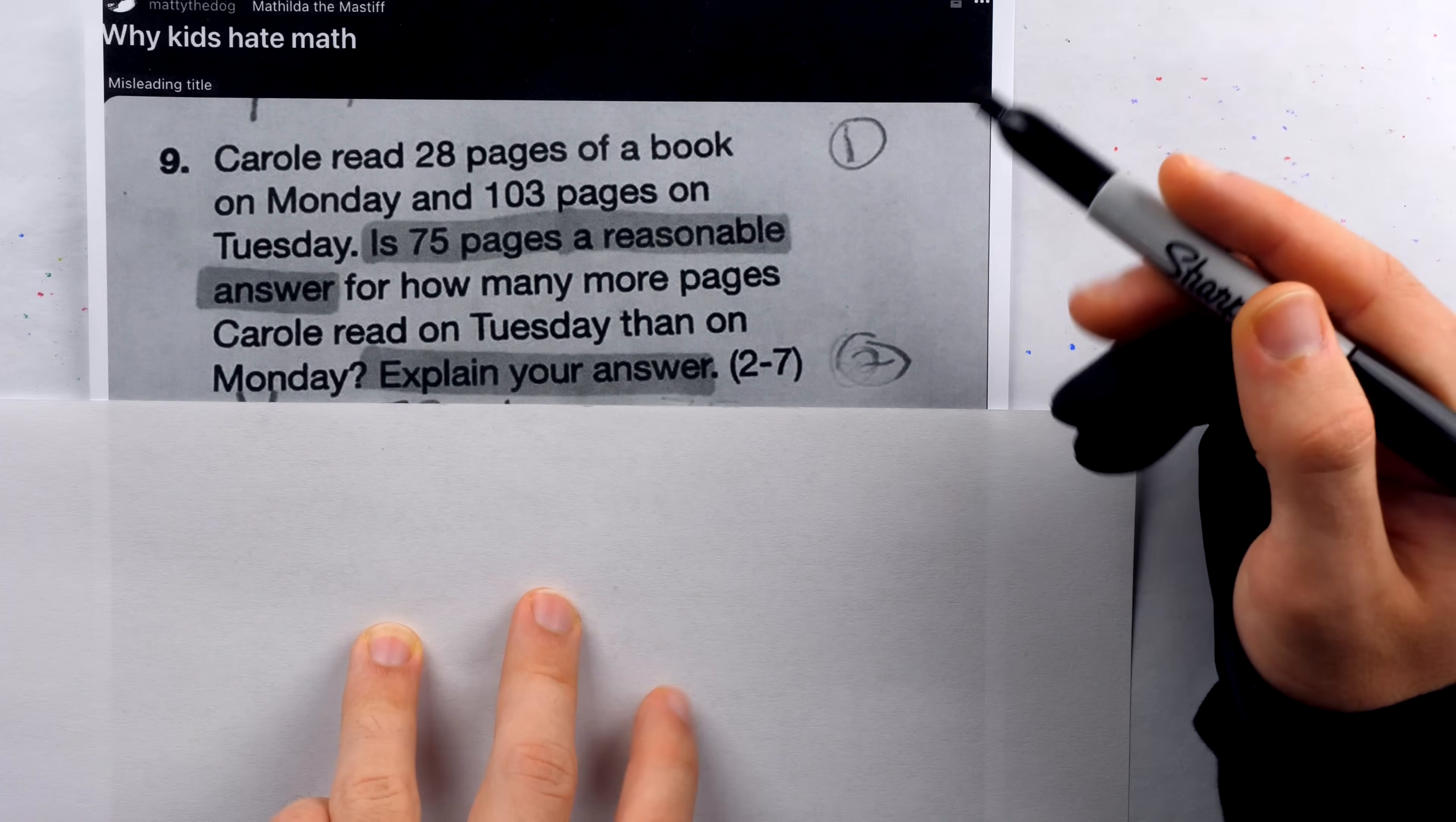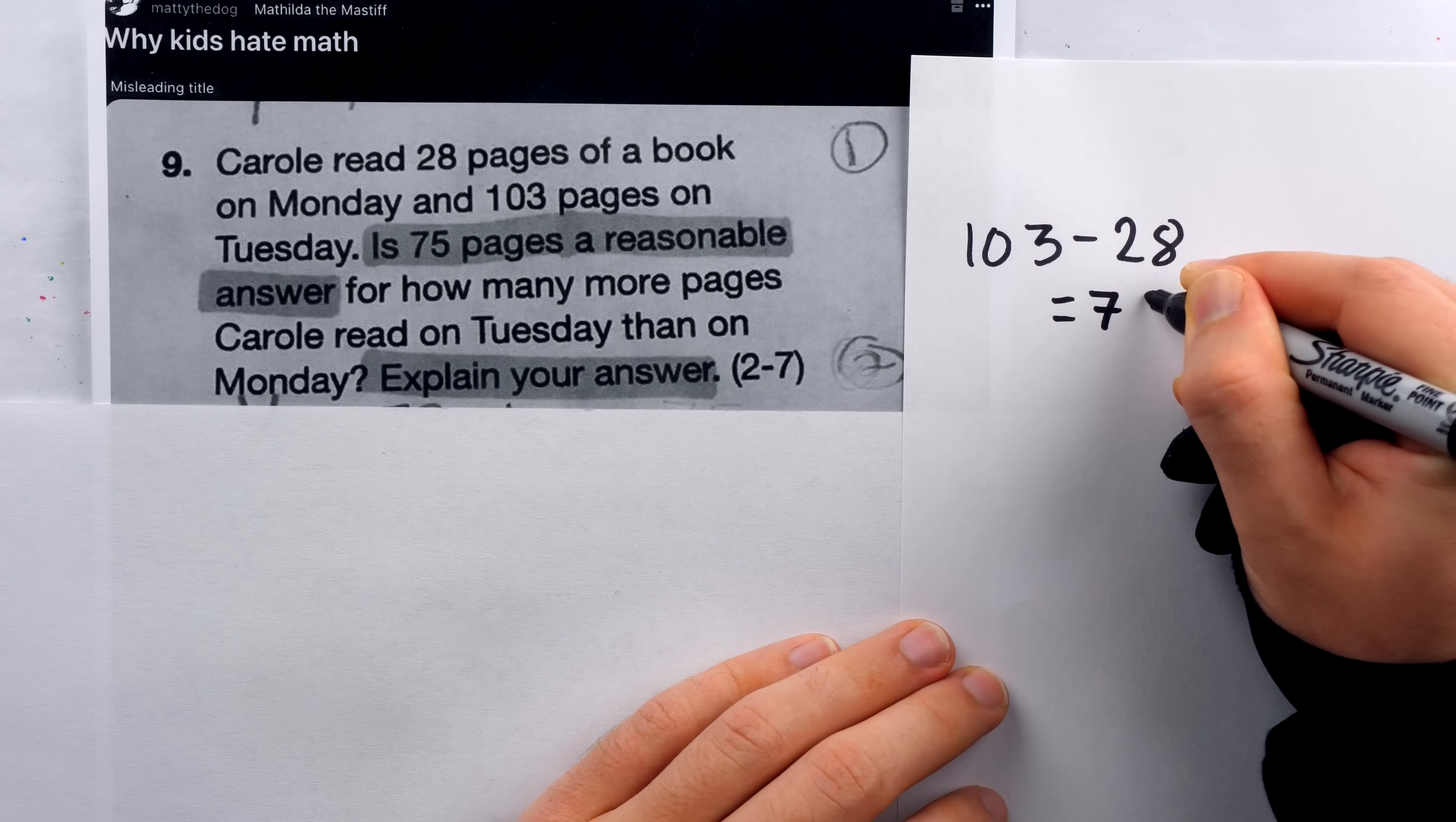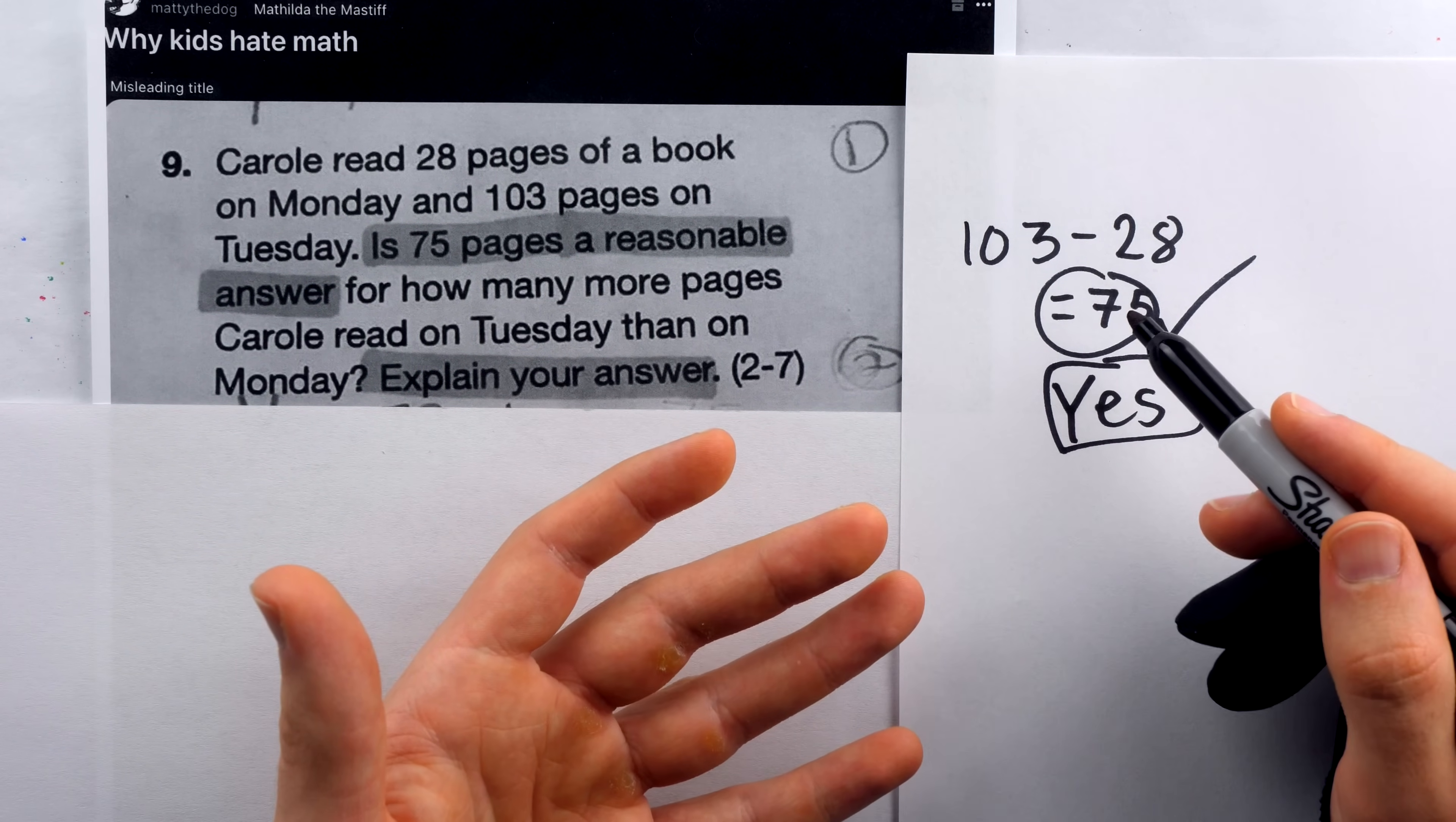Okay, is 75 pages a reasonable answer? Well, you might think the first thing to do would be to just do 103 minus 75. Is 75 pages a reasonable answer for how many more pages Carol read on Tuesday than Monday? Well, 75 is the answer for how many more pages she read on Tuesday than Monday. 75 is exactly correct. So is it a reasonable answer? We would certainly have to say yes. And certainly an answer which says yes would have to earn full credit. I mean, it's the correct answer.